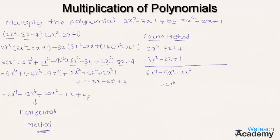Multiplying minus 2x into minus 3x gives plus 6x². Then, multiplying 1 into 2x² gives 2x², and we write 2x² below 6x² so that like terms appear in the same column. Multiplying 1 into minus 3x gives minus 3x, and 1 into 4 gives 4.